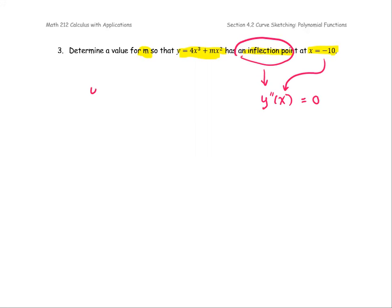Starting with finding y prime, y prime is 12x to the second plus 2m times x, and then continue with y double prime which is 24 times x plus 2 times m.